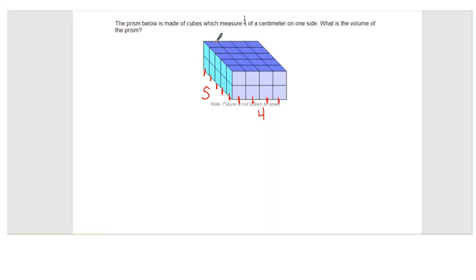So that means you have a total of 20 cubes on each layer, and you can count them right here: one, two, three, four, five, six, seven, eight, nine, ten, eleven, twelve, thirteen, fourteen, fifteen, sixteen, seventeen, eighteen, nineteen, twenty. So if you know you have five by four, that's going to be a total of 20 cubes on this layer.